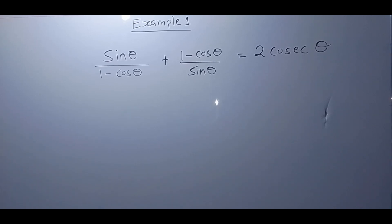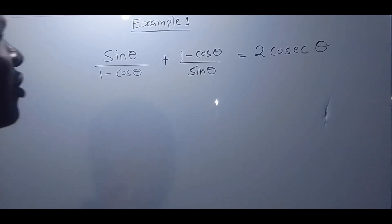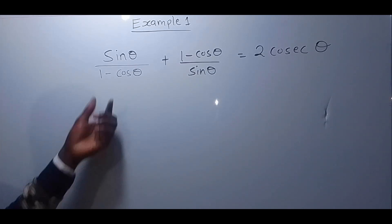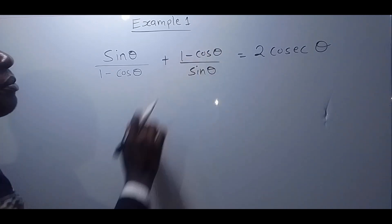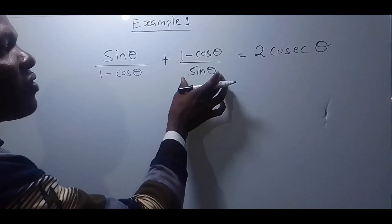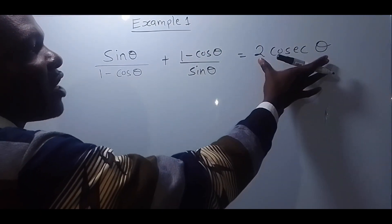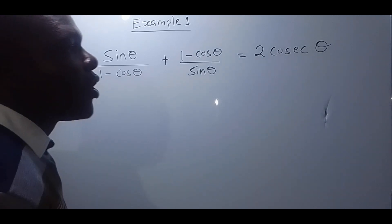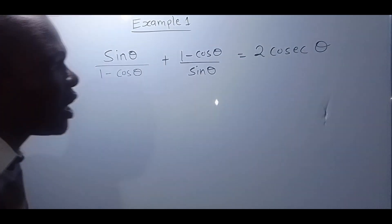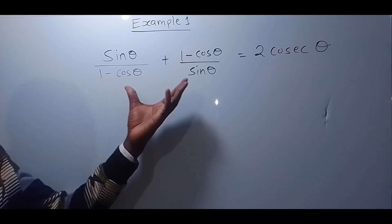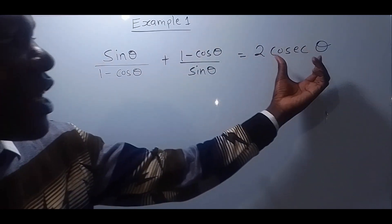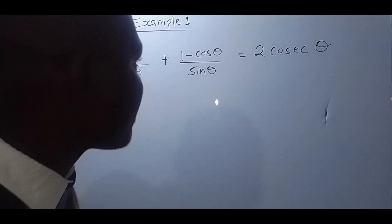Example number one: you'll be told to prove the trigonometric identity sin theta over 1 minus cos theta, plus 1 minus cos theta over sin theta, is equivalent to 2 cosec theta. To prove this trigonometric identity, we'll start with the left-hand side, then show we get what is on the right-hand side.